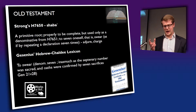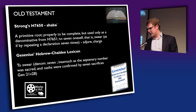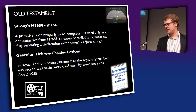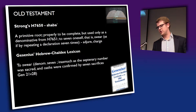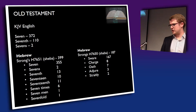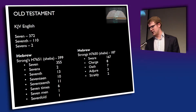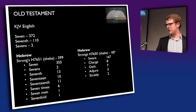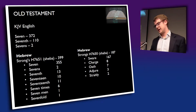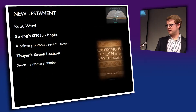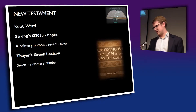Looking at occurrences in the King James English: 'seven' appears 302 times, 'seventh' 710 times, and 'sevens' twice — relating to animals going into the ark. You can see the two words 'sheba' and 'shabba' and how they're rendered in the King James. In the New Testament it is more sparse; the primary word is Strong's 2033, 'hepta,' a primary number. There are 91 occurrences of 'seven,' ten of 'seventh,' and none of 'sevens.'